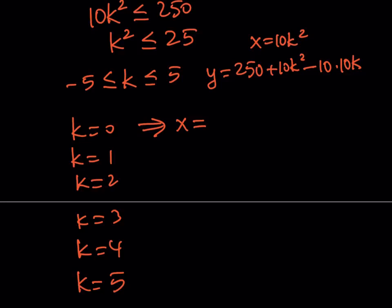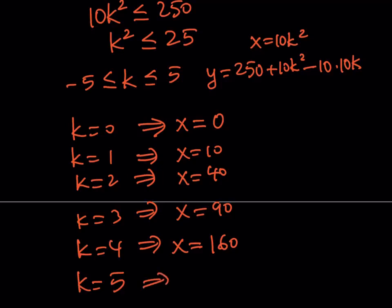So if K is equal to 0, obviously, you're going to get X equals 0. If K is equal to 1, you're going to get X equals 10. If K is equal to 2, you're going to get X equals 40. If K is equal to 3, then you're going to get X equals 90. And then from here, you're going to get X equals 160. And finally, you're going to get X equals 250. And in this case, let's go ahead and find the Y values.